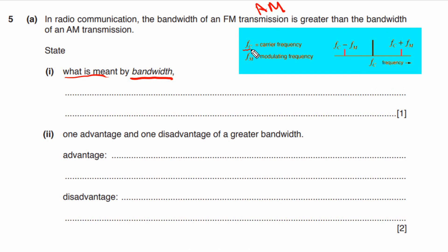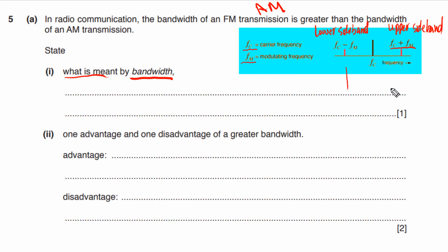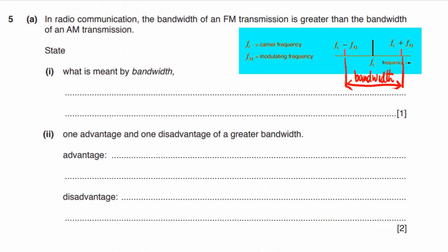Let's say we have a carrier wave with frequency fc and an information signal with frequency fm. If we look at this frequency spectrum, on one side we have the upper sideband, whose frequency is simply equal to the sum of these two frequencies (fc + fm). On the other side we have the lower sideband, whose frequency equals fc minus fm. If we subtract the lower sideband frequency from the upper sideband frequency we get the bandwidth. Bandwidth tells us the range of frequencies occupied by the modulated waveform, even though there is only one frequency for the carrier wave.